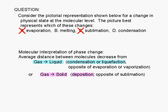In choice B. Melting involves the transformation of a solid to a liquid, but does not involve a significant change in the intermolecular distances.